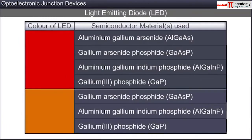The energy of the emitted photons and the color of the light produced depends on the nature and the band gap of the semiconductor material used in the LED. Here is a list of some semiconductor materials used in LEDs of different colors.